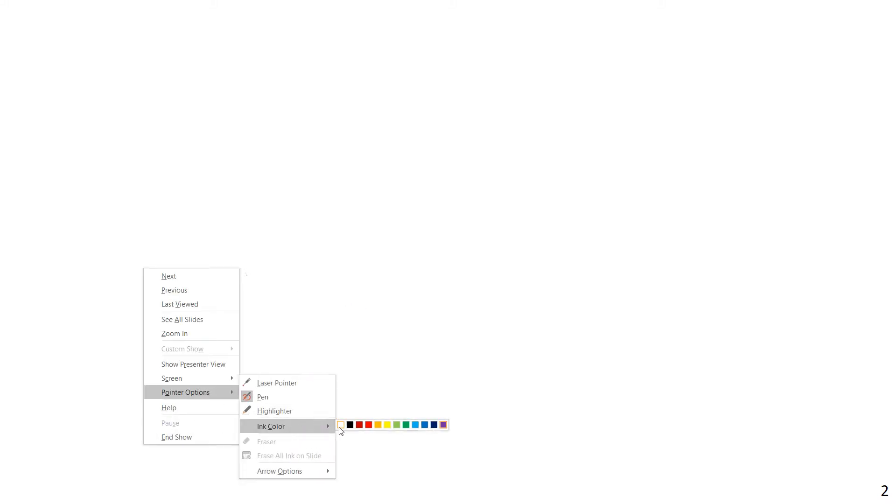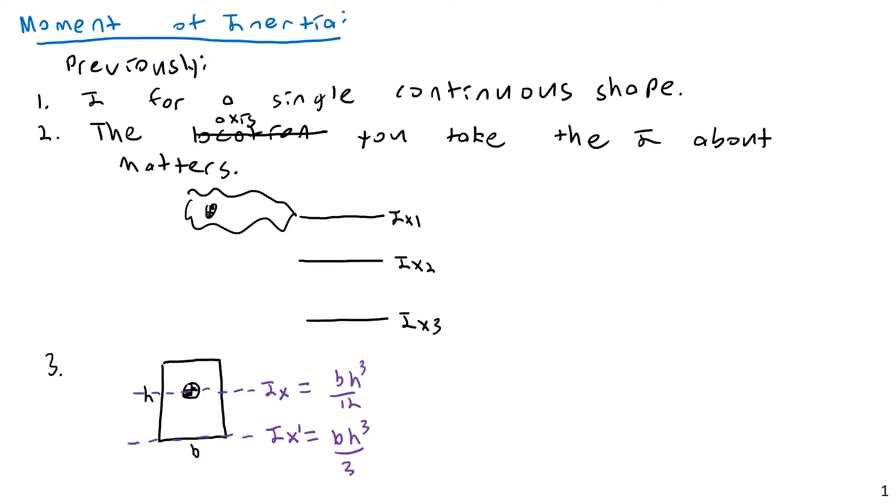And that is what the parallel axis theorem is really going to allow us to do. And different books will use different variable names. I'm going to use Ix and Ix prime, but you could use anything you want, and I've seen all sorts of different variations depending on what textbook you're using, Hibbler, Beer, whatever it may be. So, the parallel axis theorem.